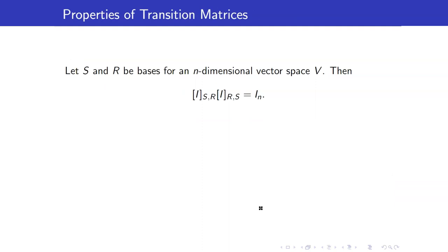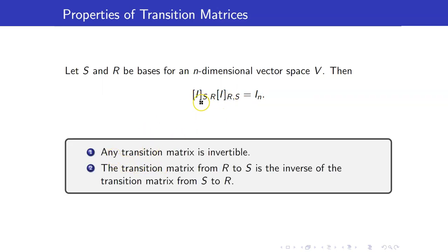Here are some important properties of transition matrices. The product of the transition matrix from R to S and the transition matrix from S to R equals the identity matrix, meaning these two are inverses of each other. Hence, any transition matrix is invertible, and the transition matrix from R to S is the inverse of the transition matrix from S to R. This is very useful, especially when it's easier to compute the transition matrix in one direction rather than the other.